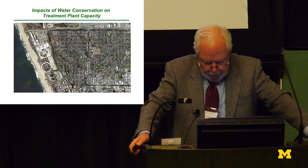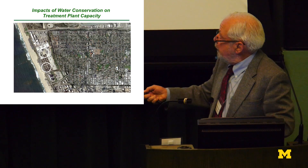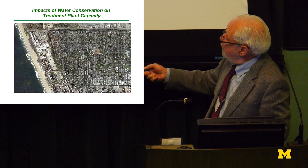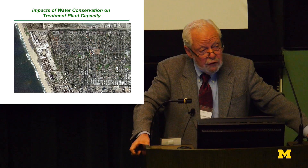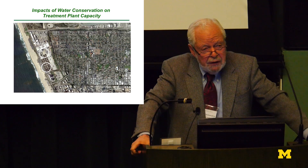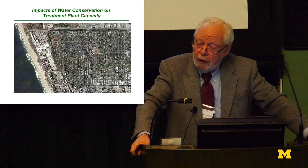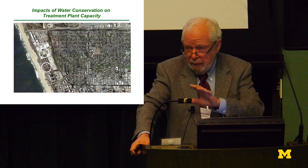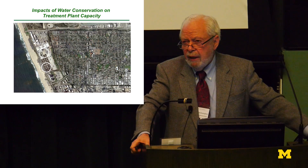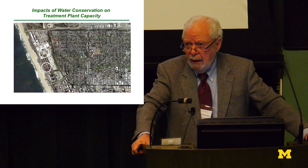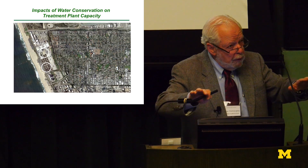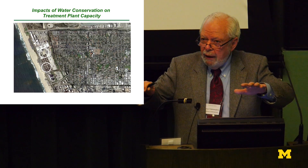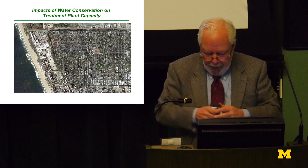With the decrease in flows, here at Hyperion these tanks are empty — because the flow has gone down by 60 to 80 million gallons per day, even though population has increased. Across the country, my estimate is that there is 30 percent excess tankage capacity. That's not uniformly distributed, but across the country there's about 30 percent empty tankage, and we're going to find other things to do with that.